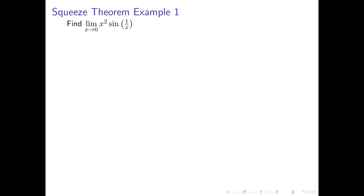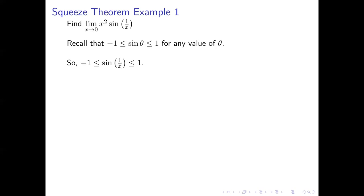Here's how we'll do this. First, we recall that the sine function's values are always between -1 and 1. So whatever theta is, sine of theta is between -1 and 1. That applies even when what's inside the sine function is 1/x. So we know that sine of 1/x is always between -1 and 1.